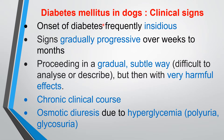Here we see details of clinical signs of diabetes mellitus in dogs and cats. The onset of diabetes is frequently insidious — that is, gradually progressive. It may take over weeks or months to develop signs. The disease proceeds in a very gradual and subtle way, making it difficult to analyze or describe, but slowly progressing to a serious condition and producing very harmful effects. The disease has a chronic clinical course.